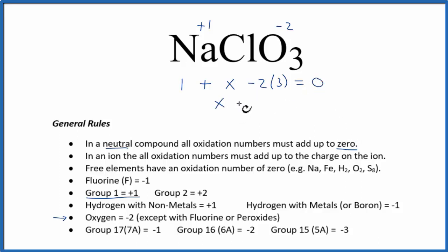So X minus 6 plus 1, so minus 5, equals 0. X is going to equal a positive 5.